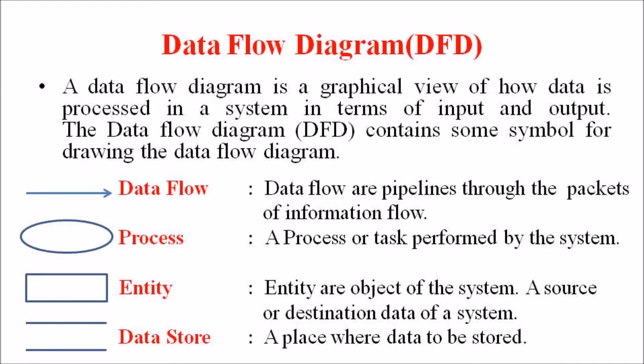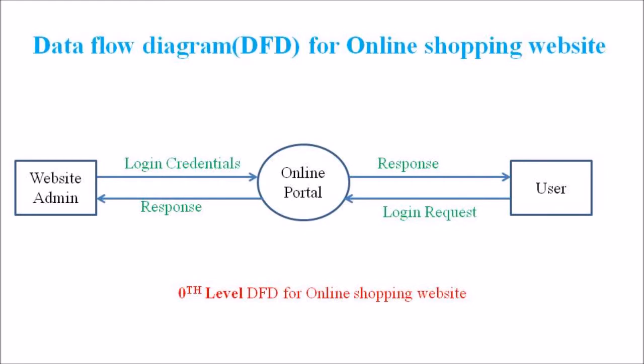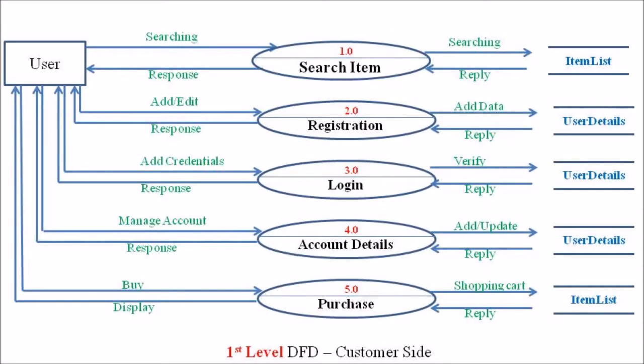In the last lectures we discussed level 0, level 1, and level 2 examples. The level 1 data flow diagram of the customer side includes five individual processes: search item, registration, login, account details, and purchase. In lecture number 44 we discussed the level 2 DFD of the search item, registration, and login processes.